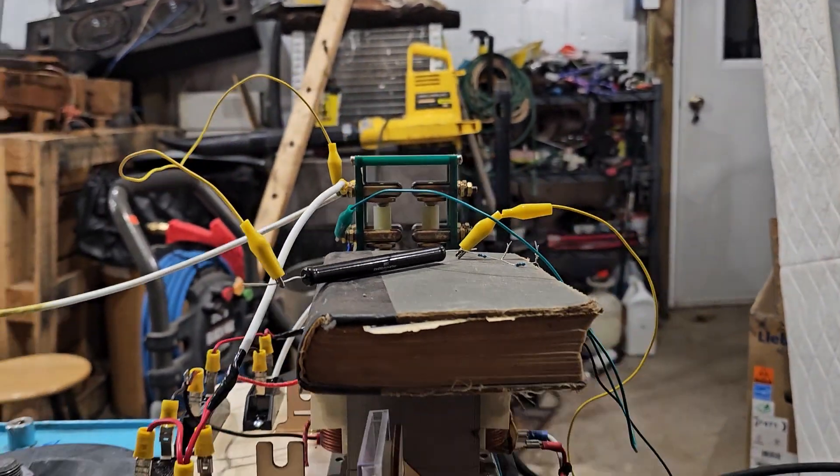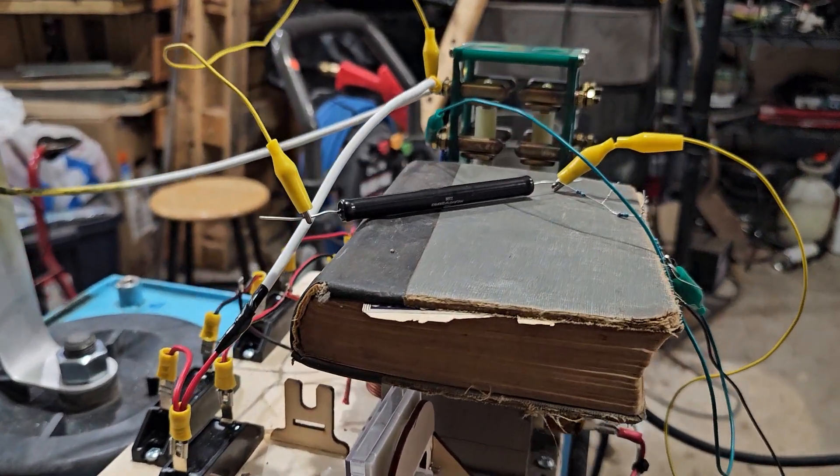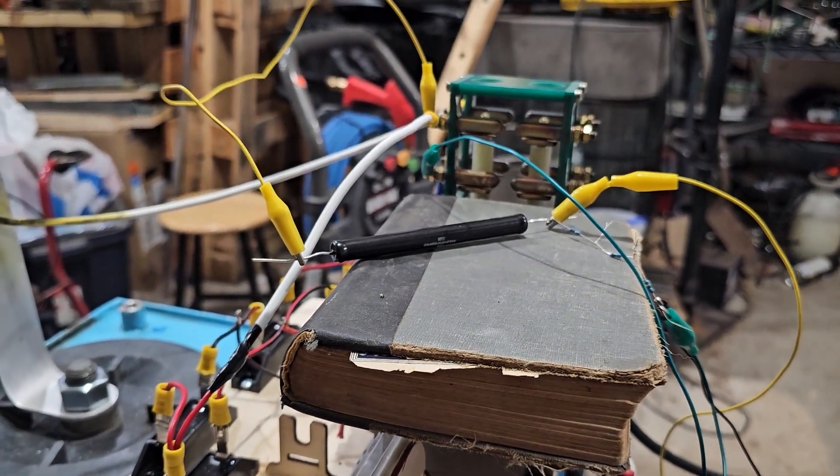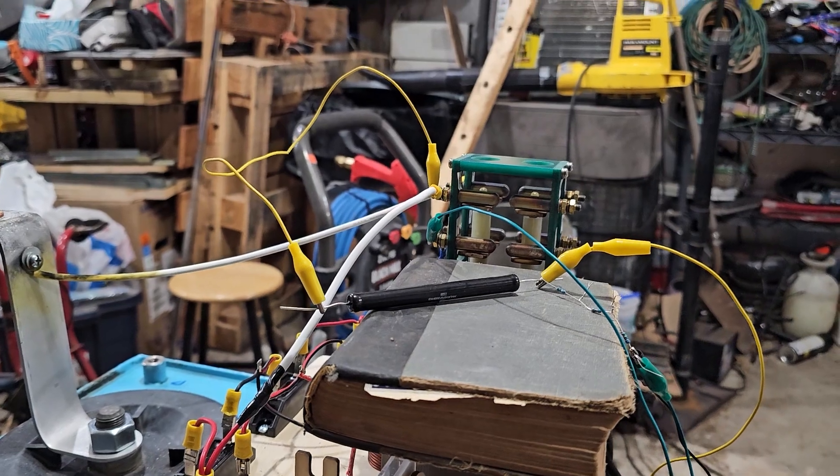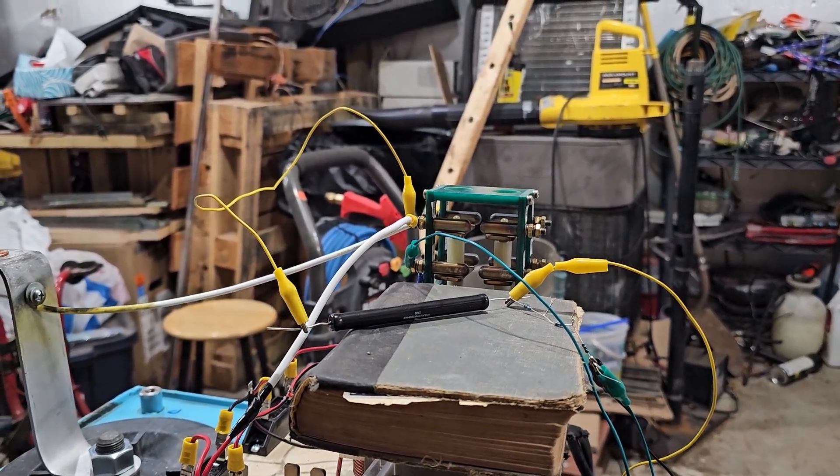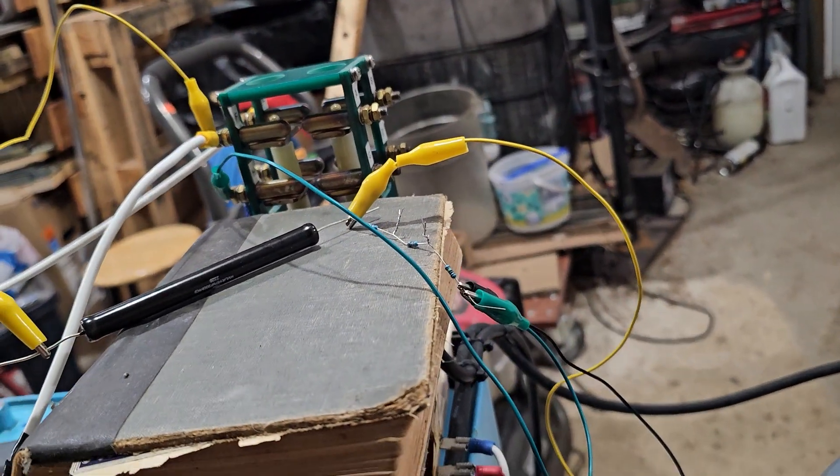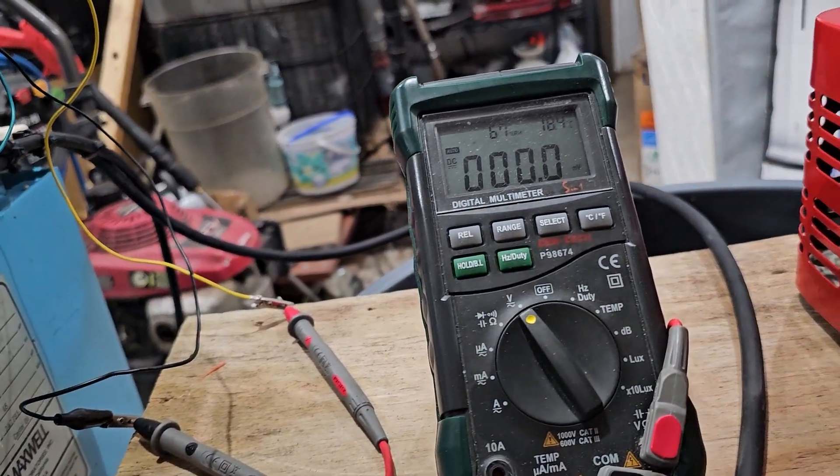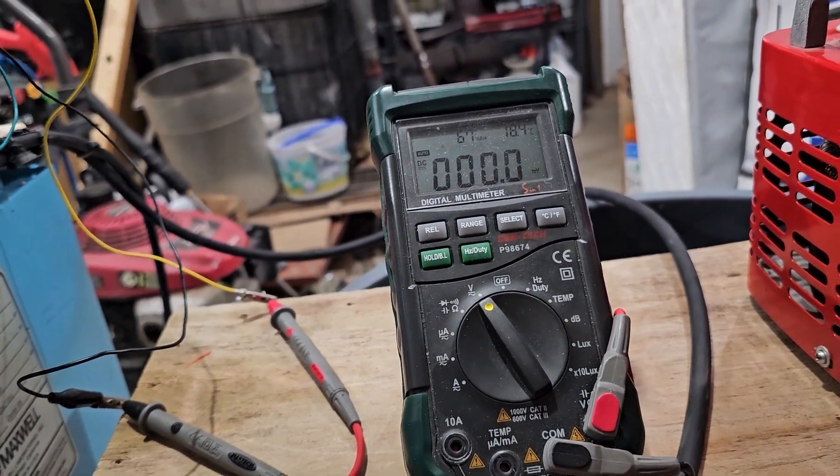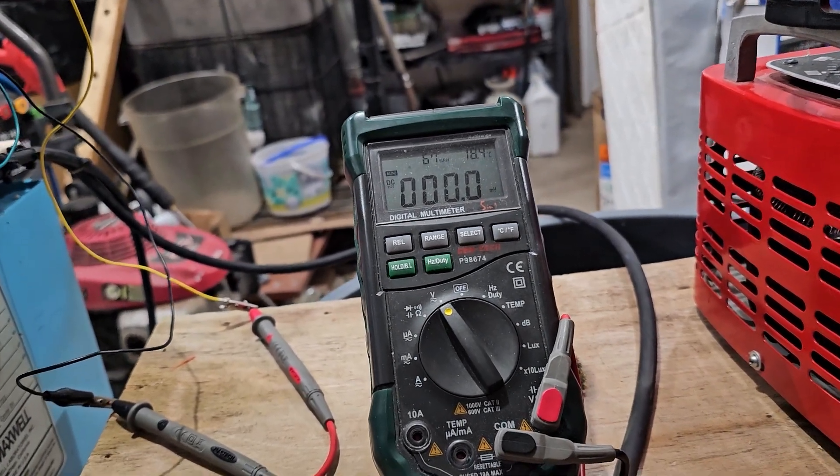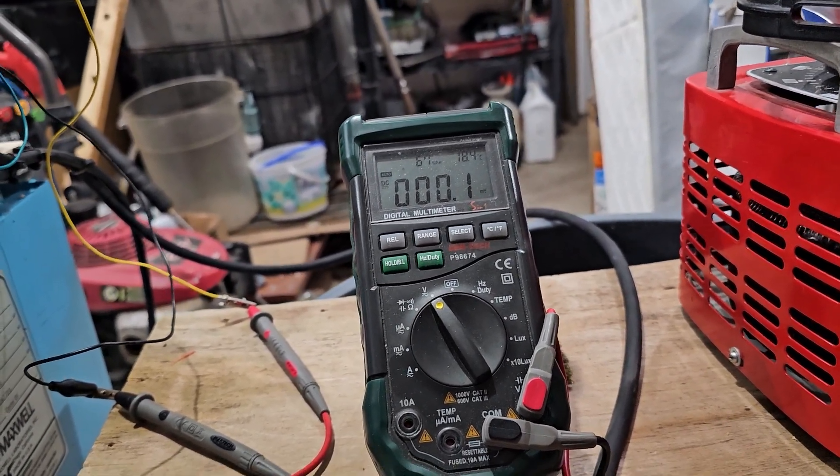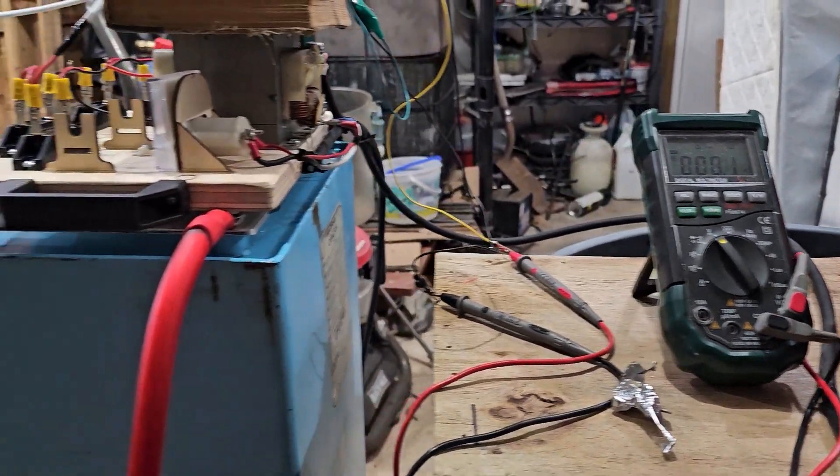And then a 200 megaohm, 30 kV resistor for the voltage divider, also currently hooked up jankily with alligator clips—super safe—and that goes to there. And then the meter lets me read it where one volt is 100 volts, so 10 volts would be one kilovolt on the bank.